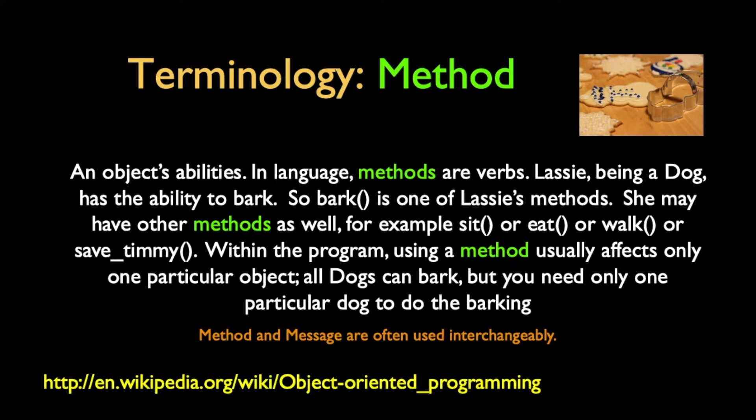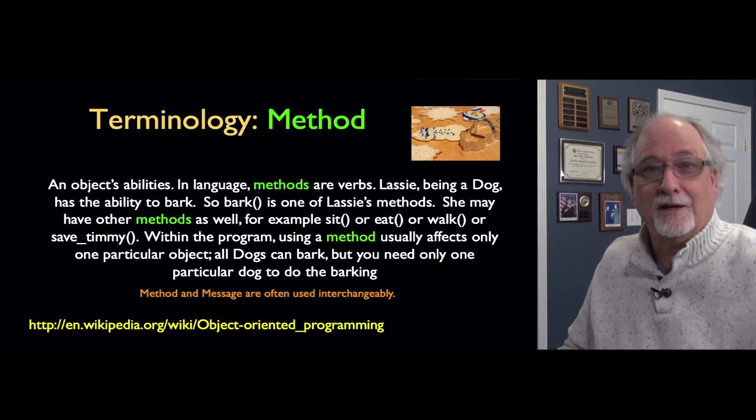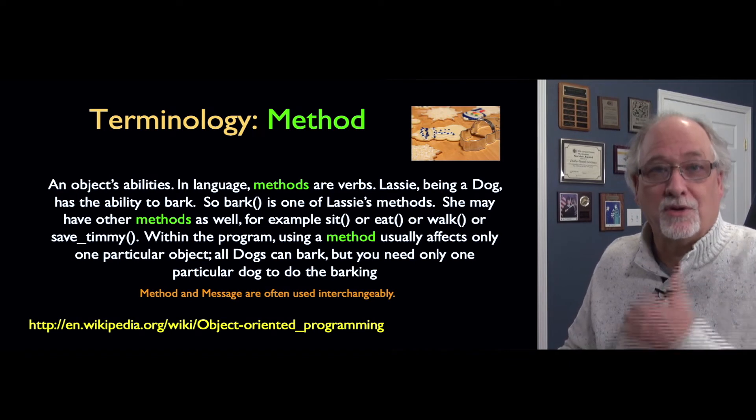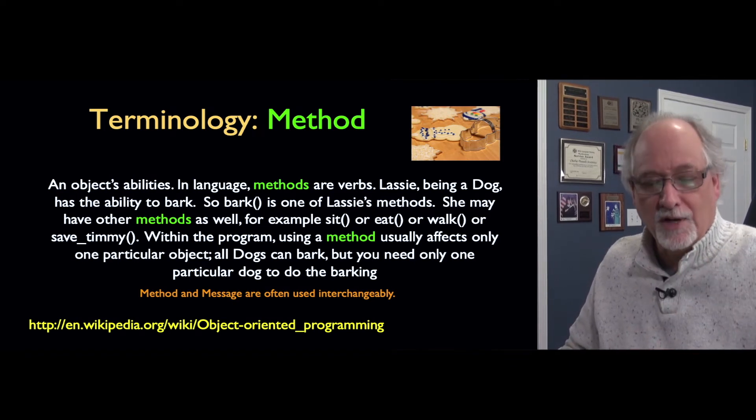Some object-oriented schools of thought use 'method' and some use 'message.' The more purist folks tend to say you're sending a message to the object, not the class. I tend to use 'method' because a method is a bit of code that lives in there — and that's just because I think of things from a procedural perspective, like Fortran or C.